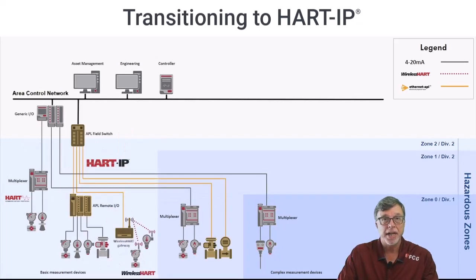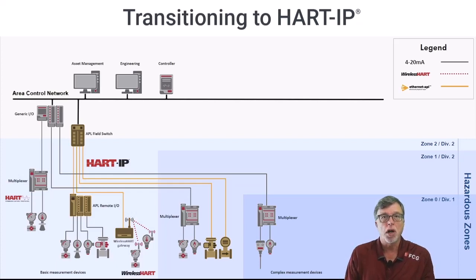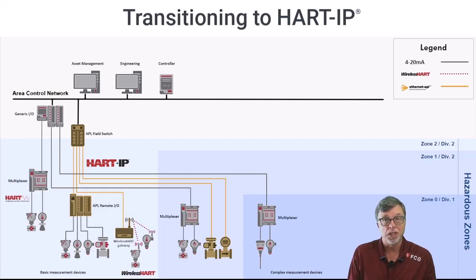In this next diagram, we are beginning to extend the network. As instrumentation supporting high-speed Ethernet APL becomes available, the plant can take advantage of the speed, hazardous area installation, and two-wire plus power advantages of the Ethernet APL physical layer. In this drawing, we've added a wireless HART gateway powered by the Ethernet APL field switch to the system in Zone 2 Div 2. We've also added two sophisticated Ethernet APL-enabled instruments — a positioner and flow meter in Zone 1 Div 2 — both powered from the Ethernet APL field switch installed in the first phase of the project.